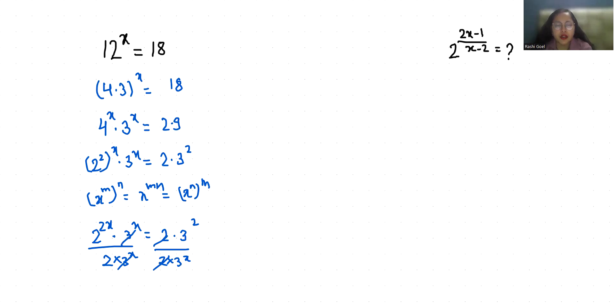According to exponent rule, x power m by x power n equals x power m minus n. So 2 power 2x minus 1 equals 3 power 2 minus x.